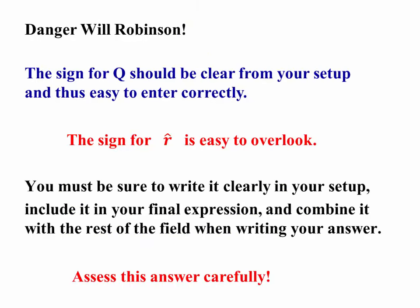Danger Will Robinson! The sign for Q should be clear from your setup and thus easy to enter correctly. But the sign for r hat can be easy to overlook. Be sure you've written it clearly in your setup and include it in your final expression so that you can pull out any sign associated with that unit vector and combine it with the value for the field before writing down your final answer. Use your assessment to check this case anytime you do a problem this way.